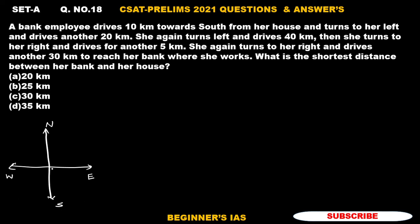Before solving the problem, let us see some basic concepts. Here are the directions. Suppose she is present here and walking towards the south — this is her right and this is her left. If you know this logic, we can solve the problem.